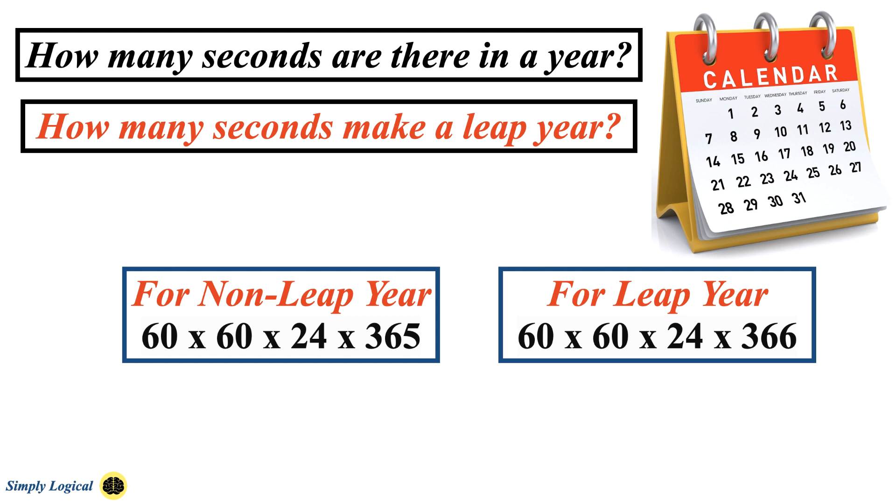Here, the first 60 represents minutes, second 60 represents seconds, 24 represents number of hours and 365 represents total number of days. The answer would be 31,536,000 seconds in a non-leap year and 31,622,400 seconds in a leap year.